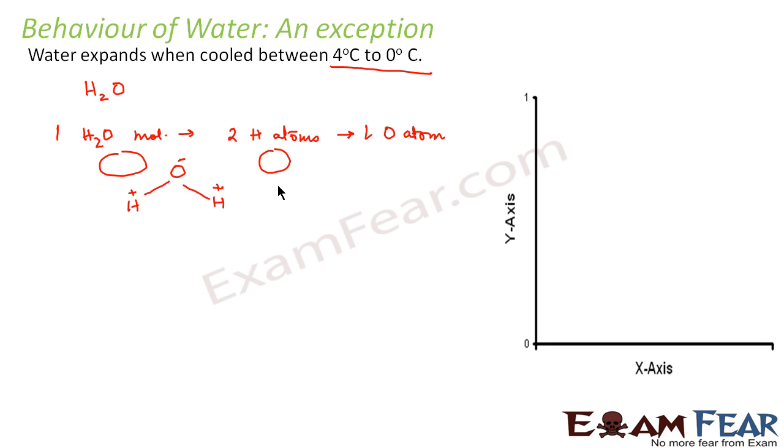Now, graphically, if we see this behavior, it would be somewhat like this. Let us suppose temperature is taken along the x-axis and the expansion behavior is taken along the y-axis. This is 0 degrees and this is 4 degrees. From 0 to 4 degrees, with increase in temperature, water is contracting. After 4 degrees Celsius, as the temperature increases, the expansion also increases.